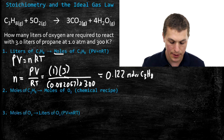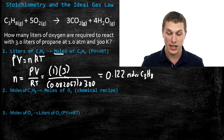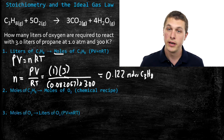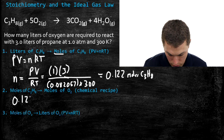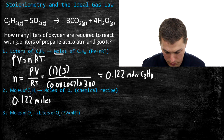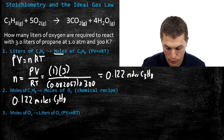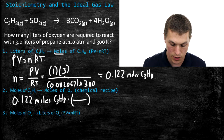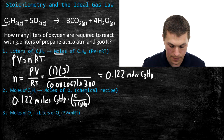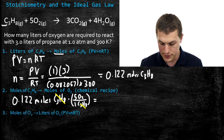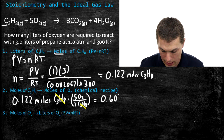Step 2: go from moles of propane to moles of oxygen using stoichiometry. We have 0.122 moles C3H8. From the chemical equation, there is an implied 1 in front of propane and a 5 in front of O2. So we multiply by the conversion factor 5 mol O2 / 1 mol C3H8, which cancels propane and gives us moles of oxygen: 0.609 moles of O2.